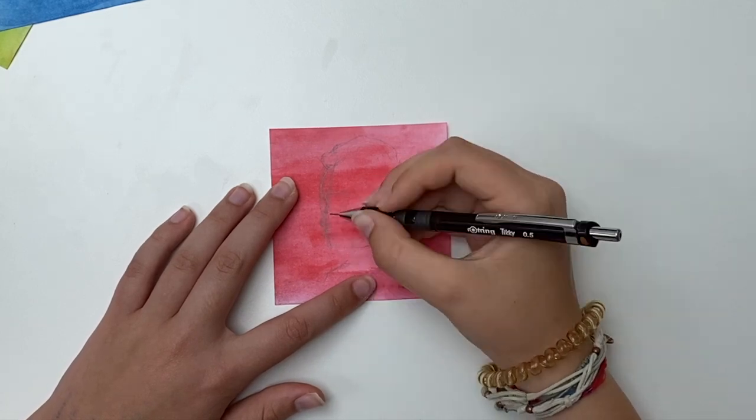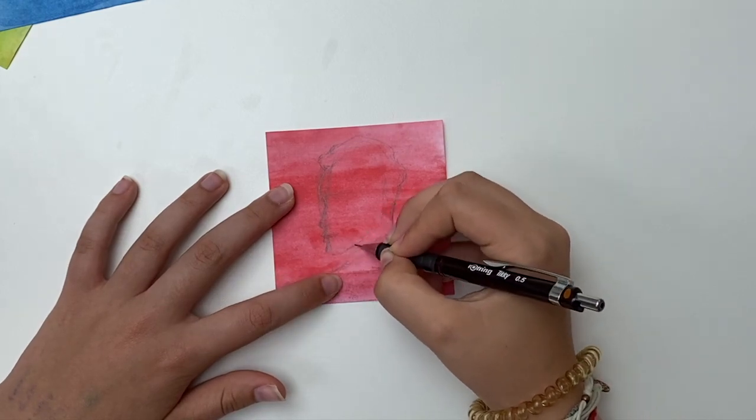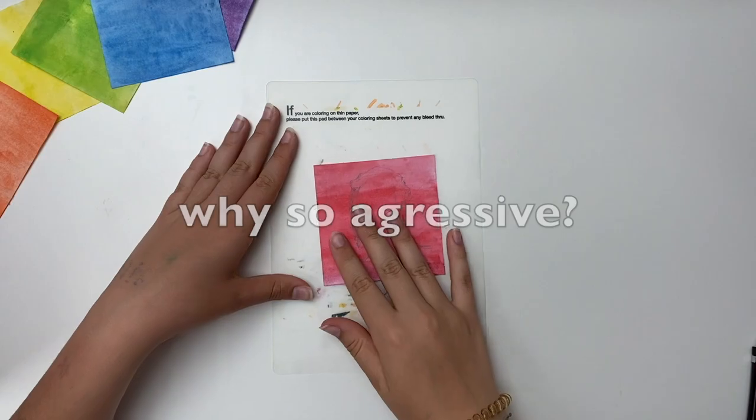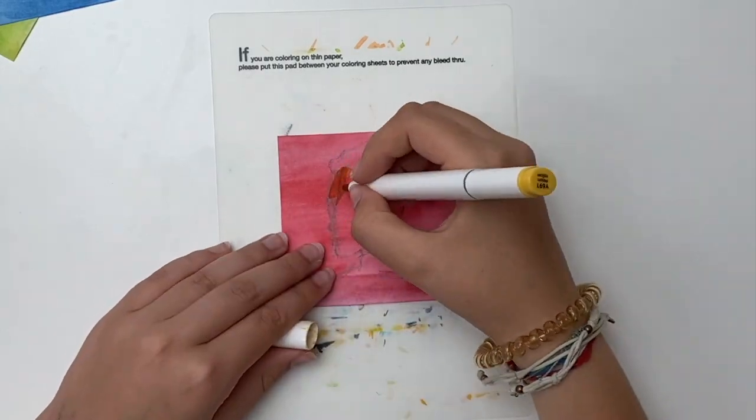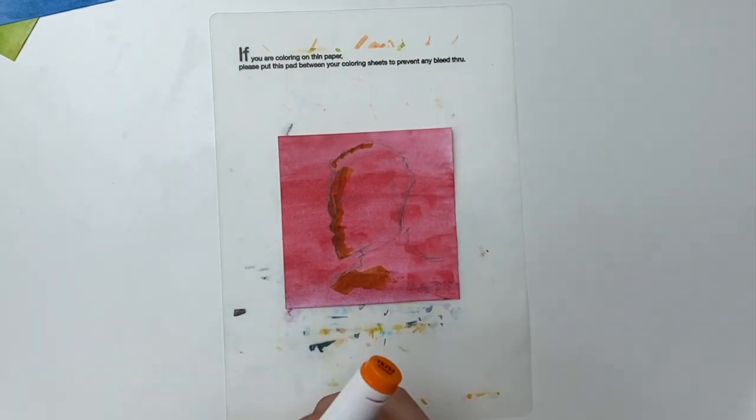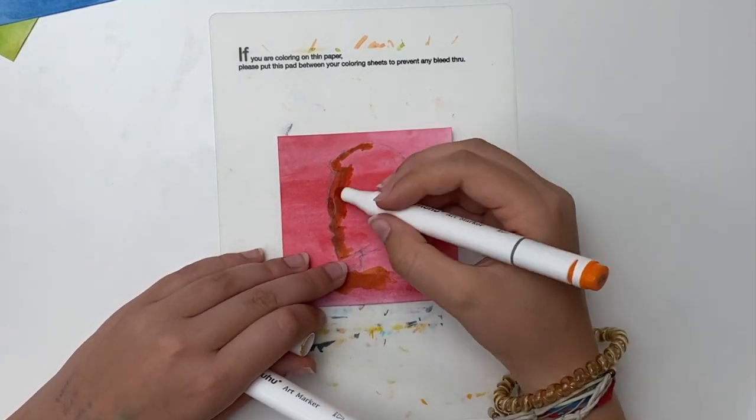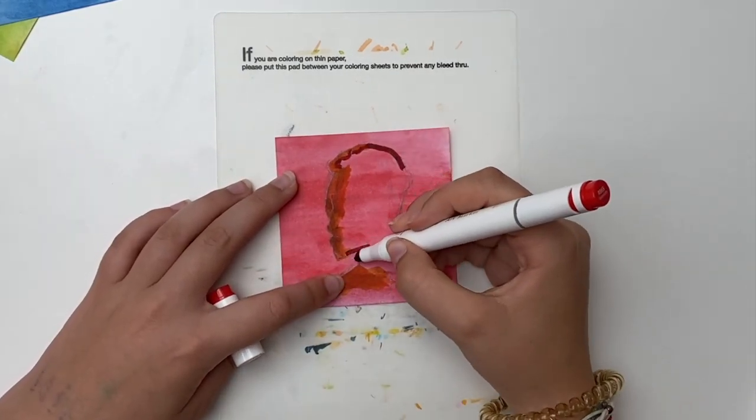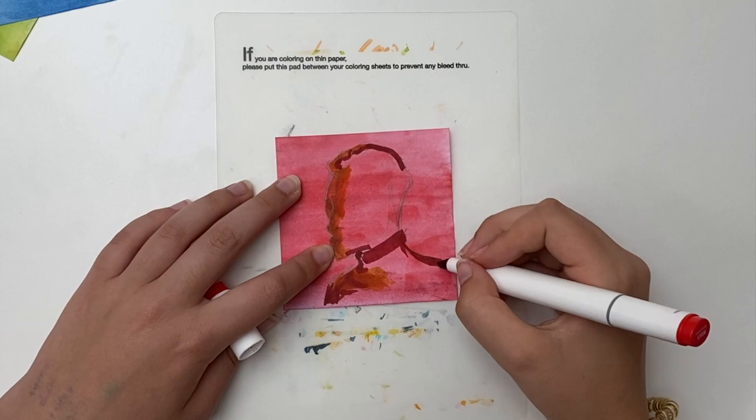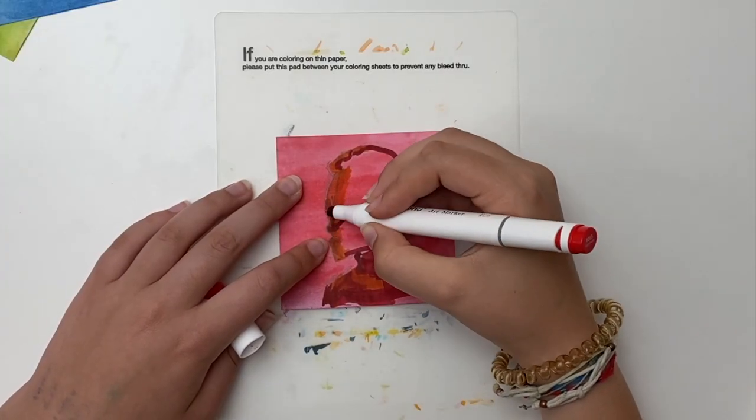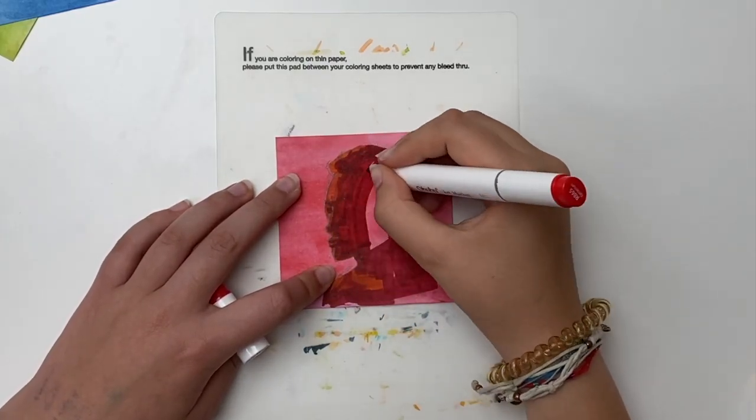I'm just going to sketch the outline of his face and then start coloring in with the Ohuhu markers. The sketch is done, so I'm starting off with yellow and then I'm going to slowly blend it with orange into red and then black. The yellow or orange aren't showing on the paper because it's already painted red.